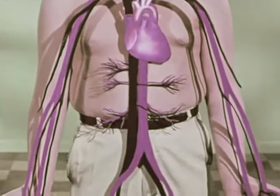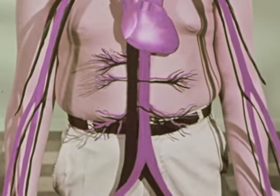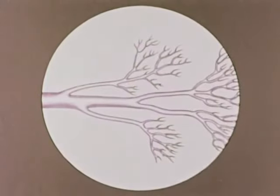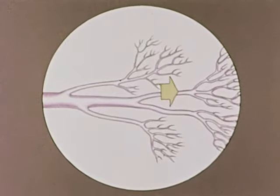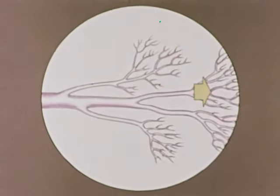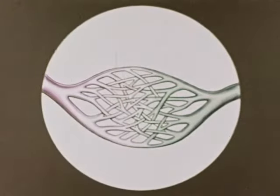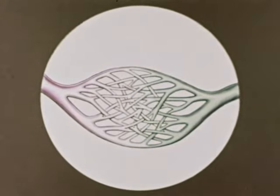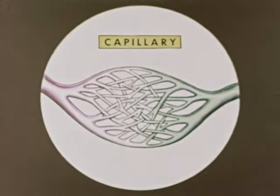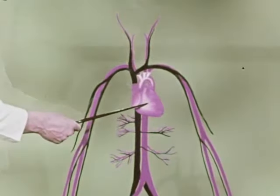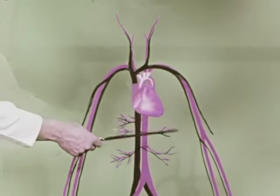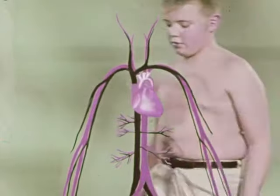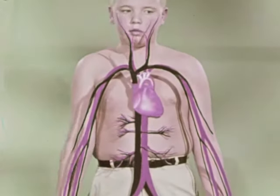The veins and arteries we see here are large. But if we were to use a microscope, we would see that veins and arteries branch and become smaller and smaller and smaller. The smallest kind of blood vessel which joins the veins and arteries throughout the body is called a capillary. The heart, the arteries, the veins, and the tiny capillaries — which are too small to see here — make up a system that circulates blood throughout the body.